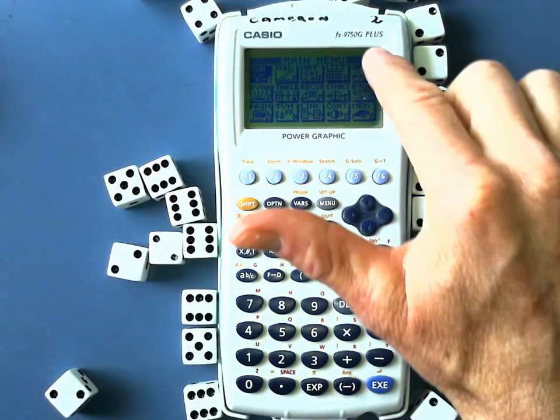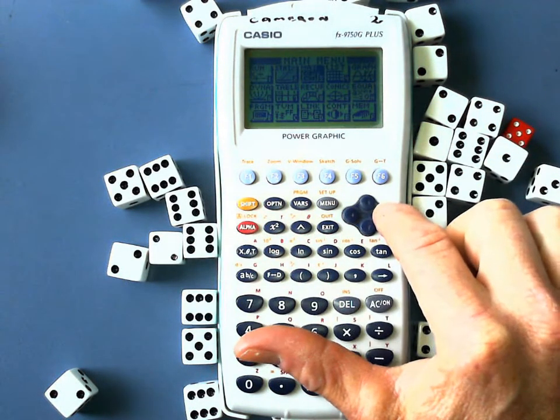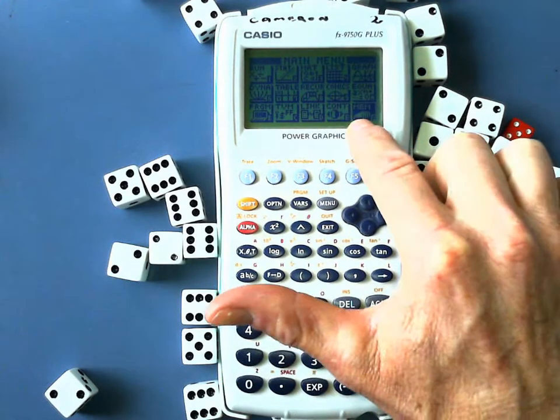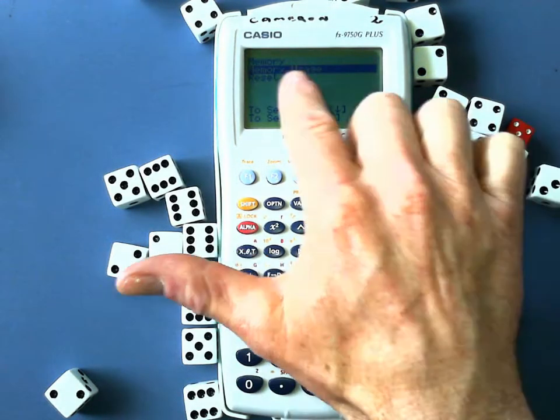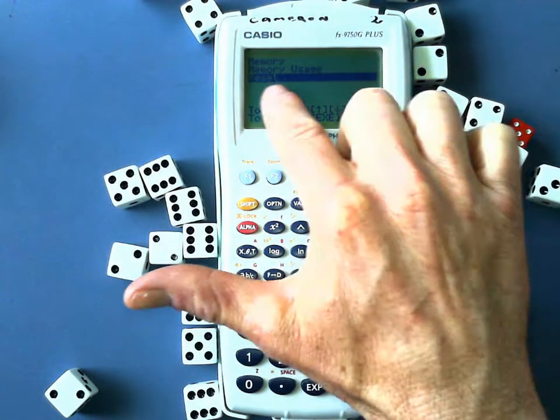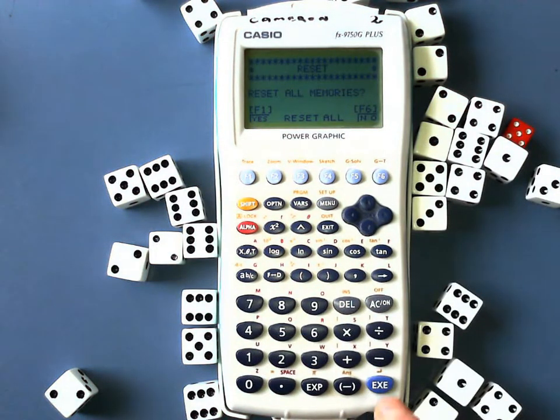And on the older ones, instead of going down to System, we just scroll over to Memory. And we execute there and just use the arrow buttons to go down to Reset. And we press Execute.